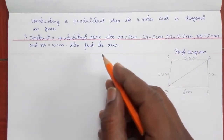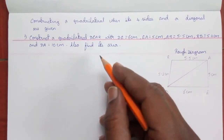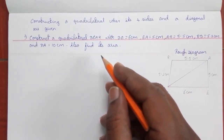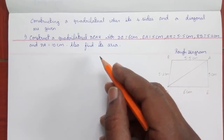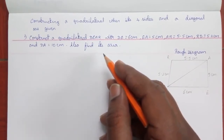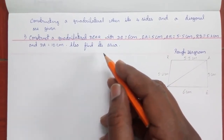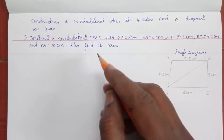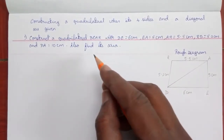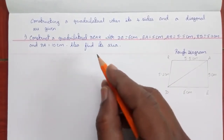To find the area of the quadrilateral, we use the formula: half into D into H1 plus H2. This is a formula we have learned in lower classes.